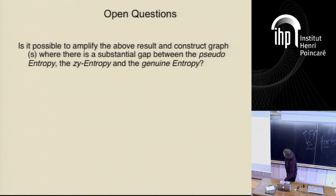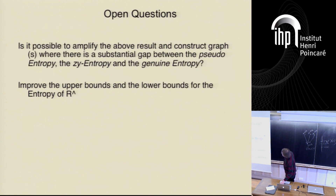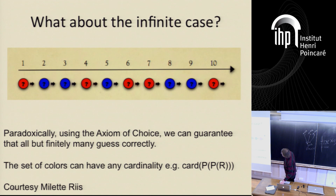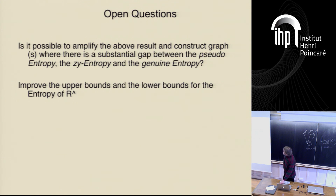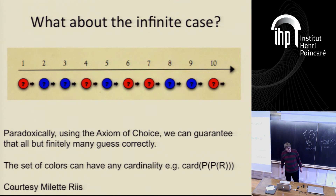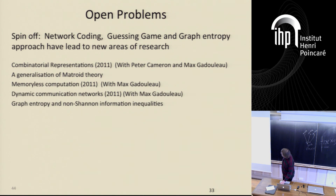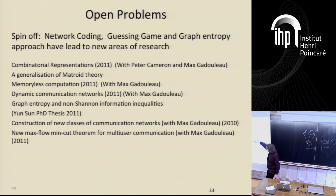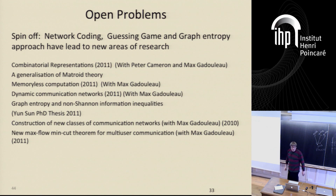I'm almost done. These are the kind of open questions remaining. There is also a curious digression about what happens when you play these hat games on infinite graphs — it relates to the axiom of choice — which we can discuss in the break. There are also many spin-offs of this research: for example, with Peter Cameron and Mark we did a generalization of matroid theory, published in a journal, and also work on memories, computation, and dynamic networks.